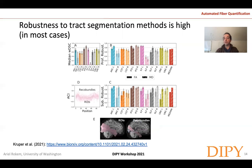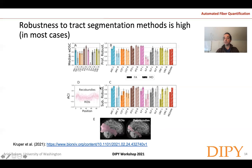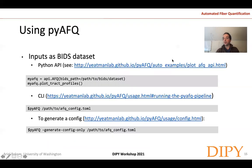Another consideration is using different methods to find the different anatomical bundles. On the left is the waypoint ROI method; on the right is the RecoBundles method implemented in Dipy, which can also be run through PyAFQ. The weighted dice coefficient between these can be quite low — for example, for the superior longitudinal fasciculus — and that is reflected in relatively low profile and subject robustness for some bundles. But other bundles show correlations between 0.6 and 0.8 for profile robustness and quite high subject robustness. I'll stop here, and in the next video I'll tell you how to use PyAFQ.